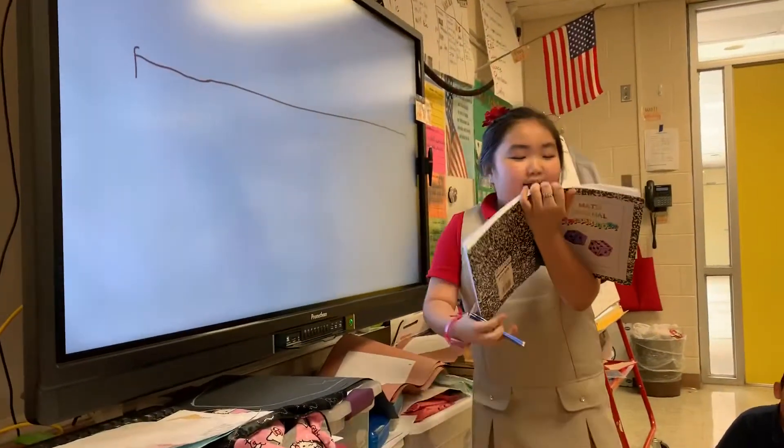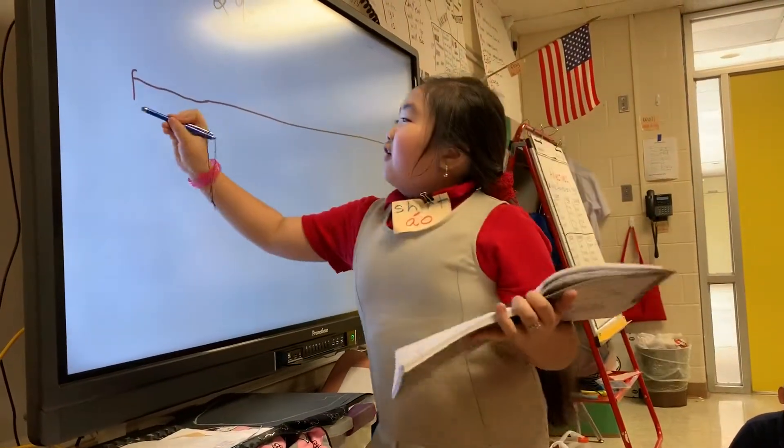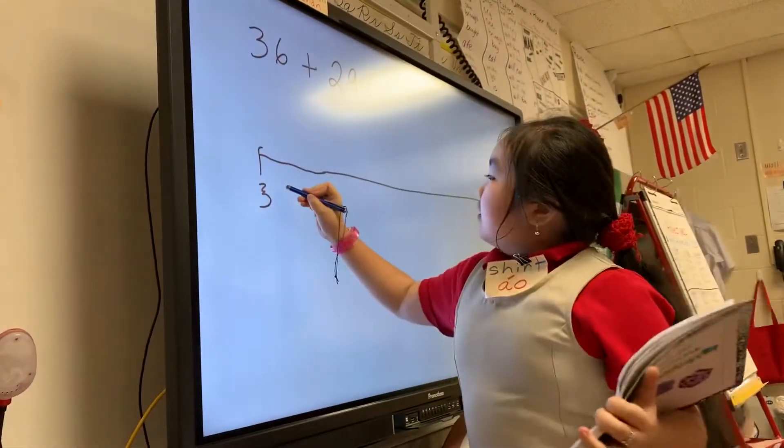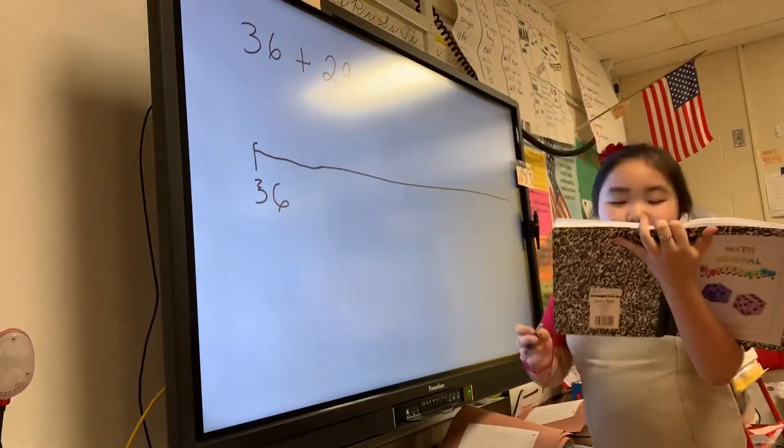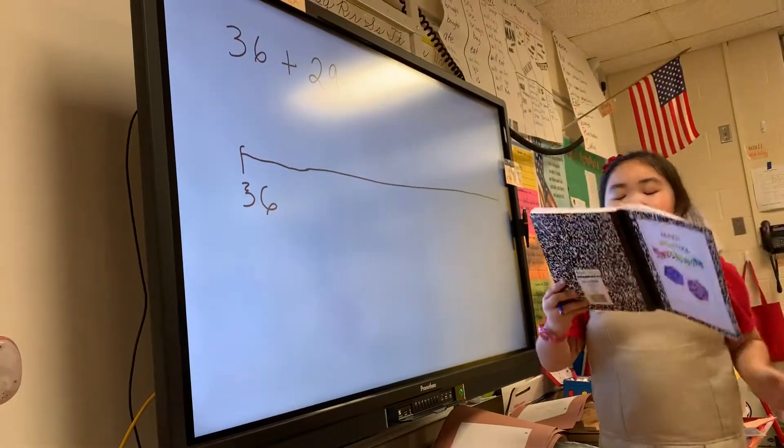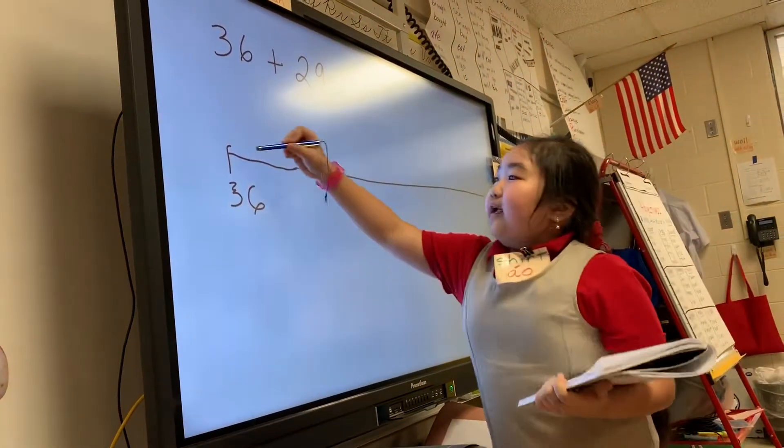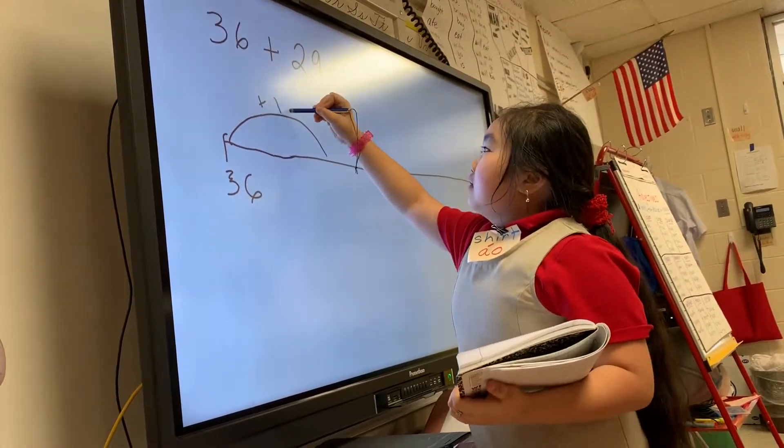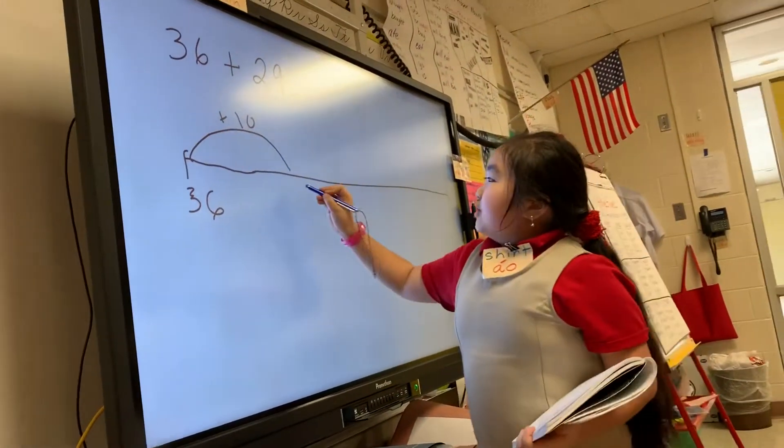Okay, so I'm gonna start from 36, then I'm gonna add 29. So first I'm gonna break it up. I'm gonna add 10 first, then I will turn to 46.